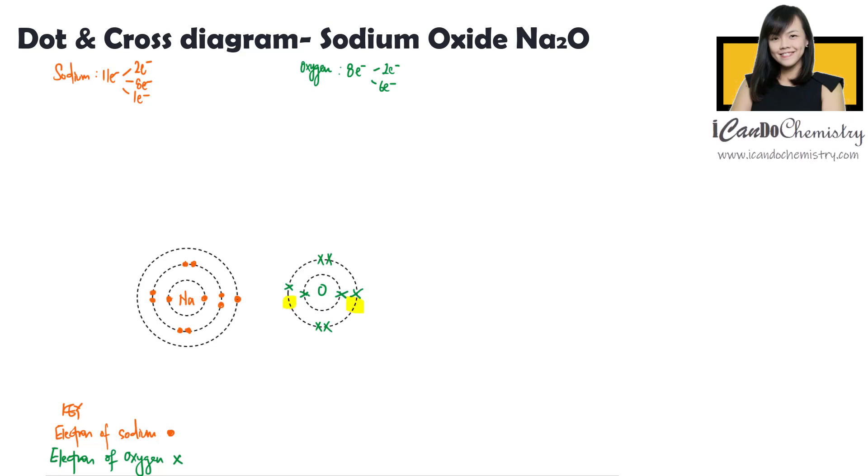It needs two more electrons to achieve the octet configuration. Oxygen needs two electrons, but sodium can only give away one electron. Hence, we will need one more sodium to help oxygen fulfill the octet configuration.